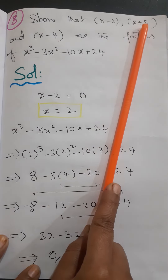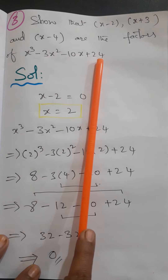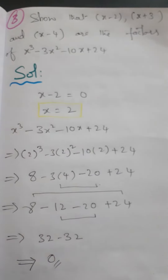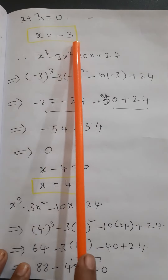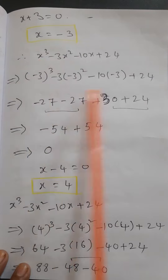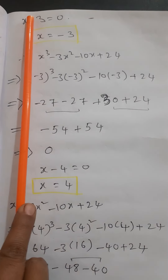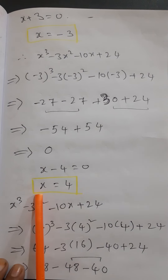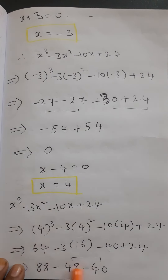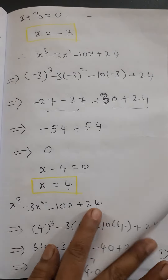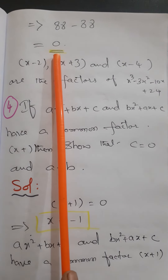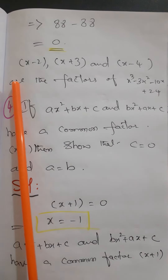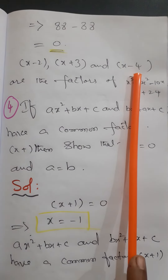We also show x + 3 is a factor. Setting x + 3 = 0 gives x = -3. Substituting x = -3 into the function gives 0 again, so x + 3 is a factor. Next, x - 4 = 0 gives x = 4. Substituting x = 4: 64 - 48 - 40 + 24 = 88 - 88 = 0. So x - 4 is also a factor. Therefore x - 2, x + 3, and x - 4 are all factors of x³ - 3x² - 10x + 24.